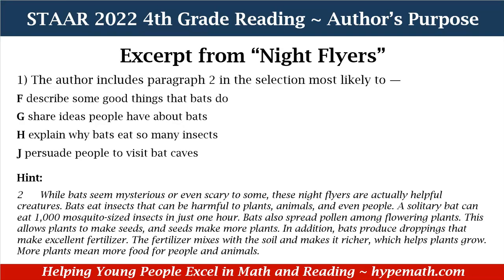So let's look at our comprehension question. The author includes paragraph two in the selection most likely to: F — describe some things that bats do; G — share ideas people have about bats; H — explain why bats eat so many insects; or J — persuade people to visit bat caves.